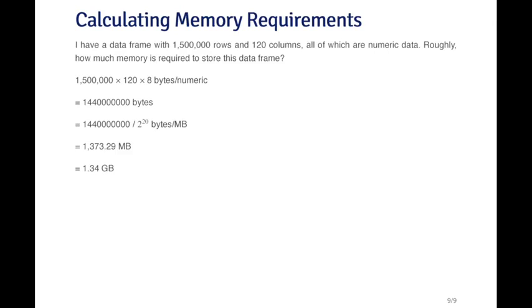There's two to the 20 bytes per megabyte. I can divide the number of bytes by two to the 20 and that's how many megabytes I got. So I've got 1,373.29 megabytes. I can divide that again by two to the 10 to get the number of gigabytes. So it's going to be roughly 1.34 gigabytes. The raw storage for this data frame is roughly 1.34 gigabytes.